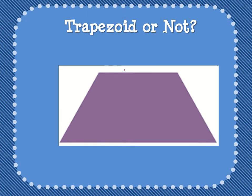The reason it's a trapezoid is it has one pair of parallel sides. If these two sides went on and on forever, they would never touch. So this is a trapezoid.